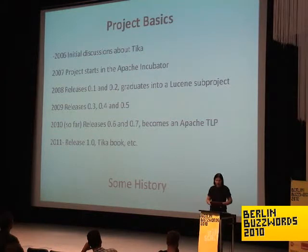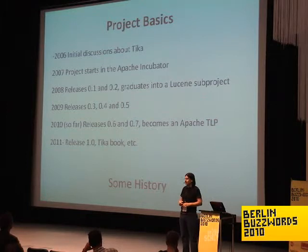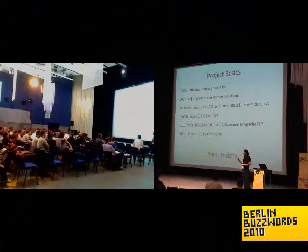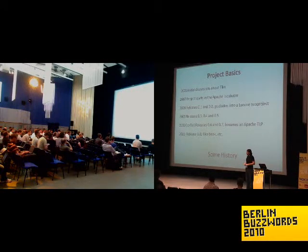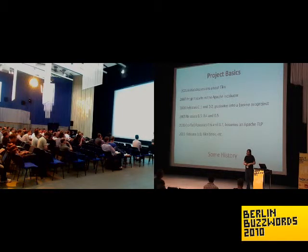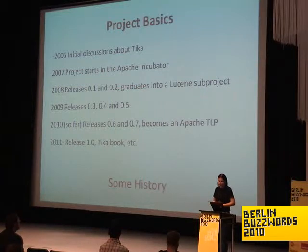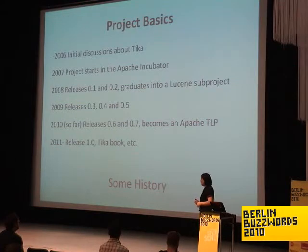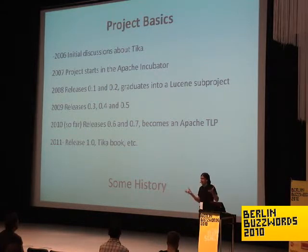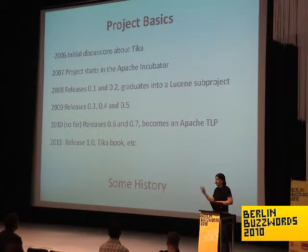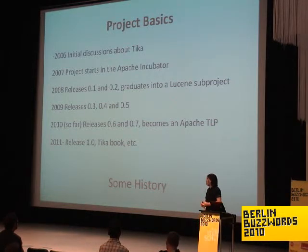You need a lot of glue code to put it all together. So in 2006, a group of people around Apache Nutch, Jackrabbit, and some projects outside Apache got together and realized: why don't we pool our efforts and build a single toolkit for this specific purpose? That's what led to the birth of the Tika project. We went into the Apache incubator, spent some time hashing out the basic design, did some releases, built up the community, became a Lucene subproject pretty fast, and now we're a top-level project working towards the 1.0 release.